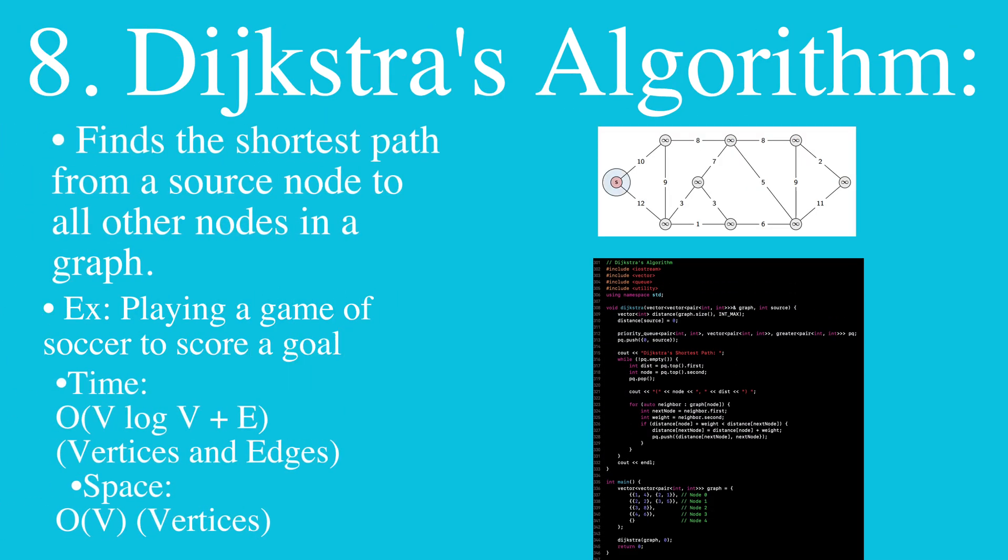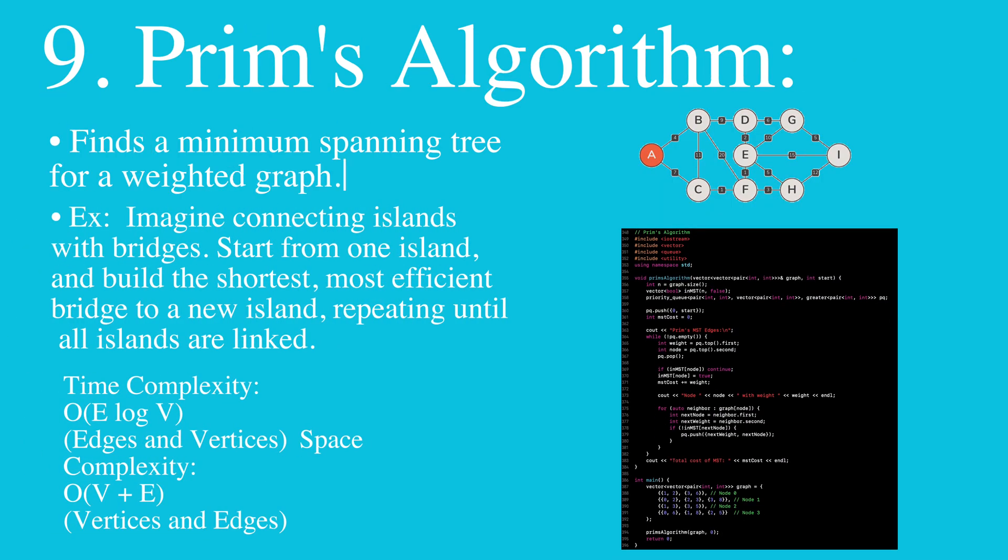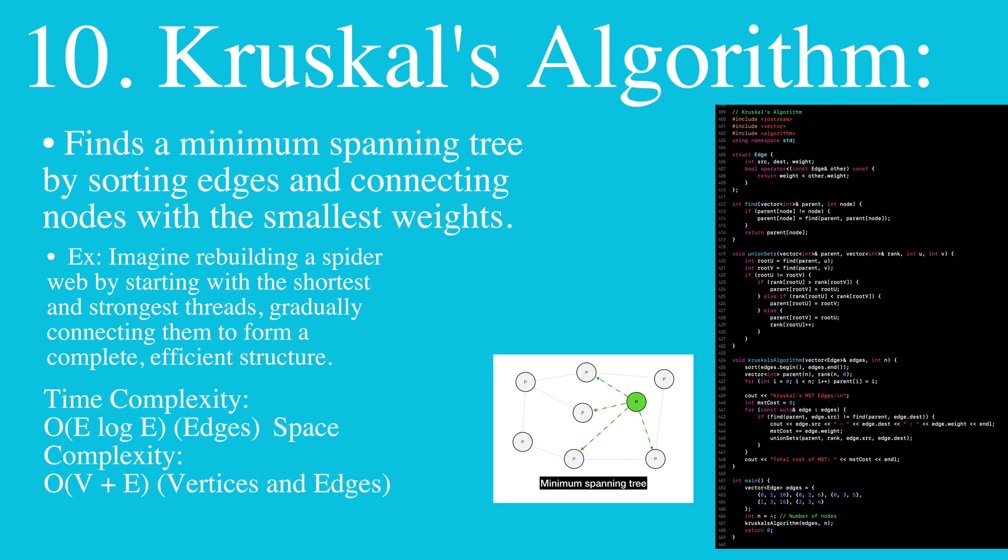Then we have Dijkstra's algorithm, which finds the shortest path from a source node to all other nodes in a graph. Then we have Prim's algorithm, which finds a minimum spanning tree for a weighted graph. Then we have Kruskal's algorithm, which finds a minimum spanning tree by sorting edges and connecting nodes with the smallest weights.